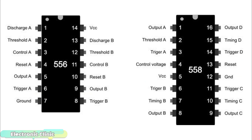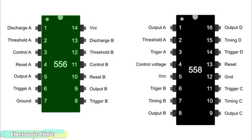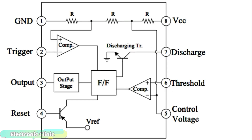Two other packages of the timer IC are available, which are 556 and 558. The 556 timer IC has 2 timing circuits, which is also known as the dual timer. While the 558 timer IC has a total of 4 timing circuits, which is also known as the quad timer.